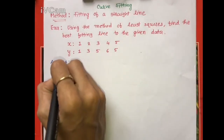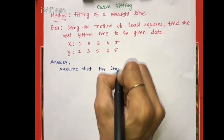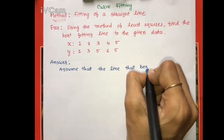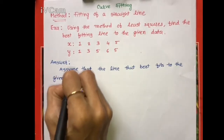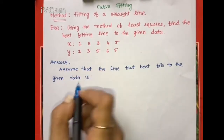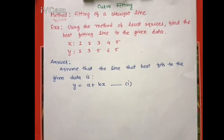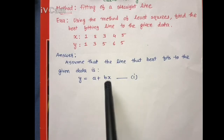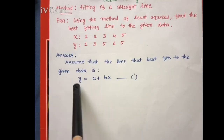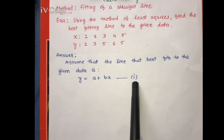So here we assume that the line that best fits to the given data is y = a + bx, which we call equation 1. Here x is the independent variable and y is the dependent variable on x.